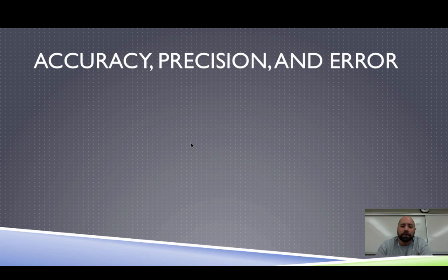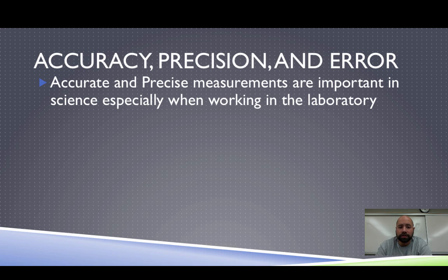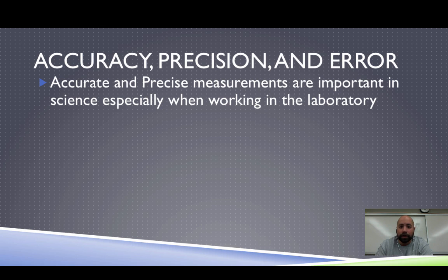The first thing we're going to worry about is accuracy and precision. When we are in the lab trying to measure something or run an experiment, it's important to get the results we are looking for. Accuracy and precision are two big things that are going to carry throughout the year — whenever you do an experiment, whether it's in chemistry, physics, or biology, they are going to be very important.